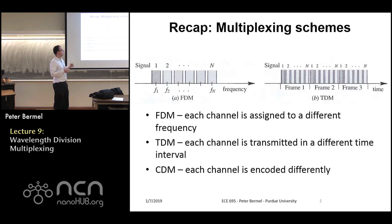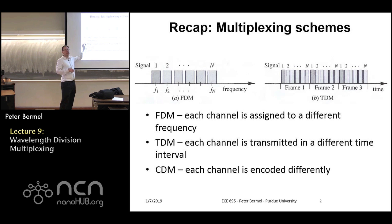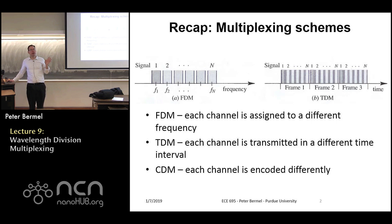In time division multiplexing you get a new time window every so often, as illustrated on the right. The third approach is code division multiplexing, which is somewhat analogous to TDM, but instead of having a signal in a short time period, it's spread out over a longer time period and they're interleaved in various ways. Today we're just going to focus on the first type: frequency or wavelength division multiplexing.